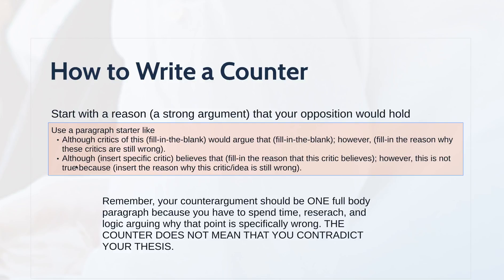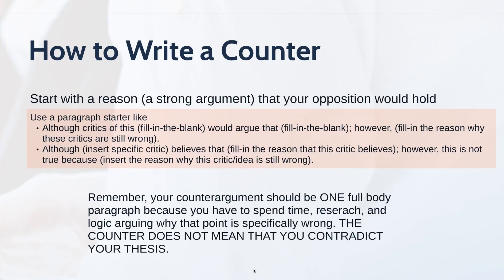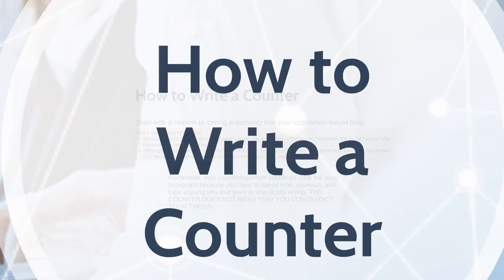Or if you've already found a specific critic or article that pushes back on your argument, put that specific critic here — list them by name. For example: 'Although Dr. So-and-so at such-and-such university believes that [quote or research]' — then you have a specific person or idea to attack. Remember to still include the citation. You can also use opposing sources' research to help balance out your counterargument. The counterargument should only be one full body paragraph because you have to spend time and logic arguing why that point is specifically wrong. It does not mean you contradict your thesis.